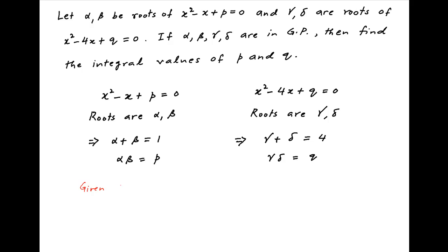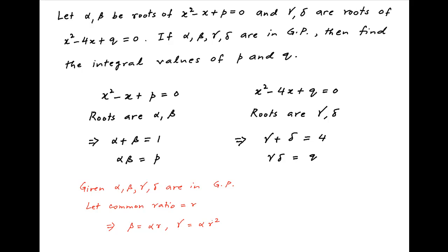Now, we are given that alpha, beta, gamma, and delta are in geometric progression. Let's assume that the common ratio of this geometric progression is r. Therefore, beta equals alpha times r, gamma equals alpha times r squared, and delta equals alpha times r cubed.